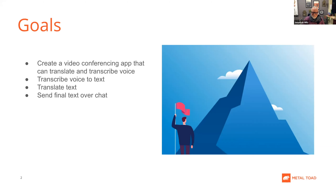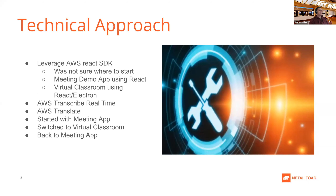You'd be able to know what a person speaking another language is saying, or understand what others are saying if you cannot hear. We're starting with a boilerplate AWS React app from one of Nathan's demos, then using AWS Transcribe to get voice-to-text from either the app or raw microphone data, and then using Amazon Translate. For display, we decided to leverage the chat functionality that Chime provides.